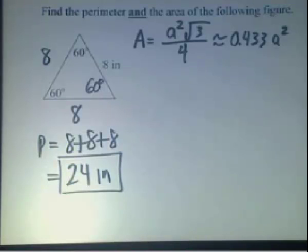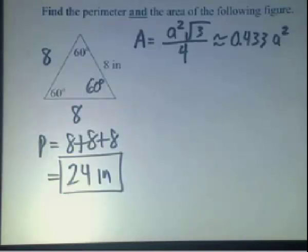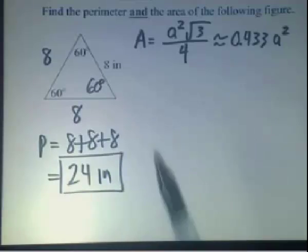The challenge here really is to find the area. And you see the area formula here represented: a squared root 3 all over 4, or you can use an approximation 0.433 times a squared. Now what a is in this case is the value of one of the three equal sides.